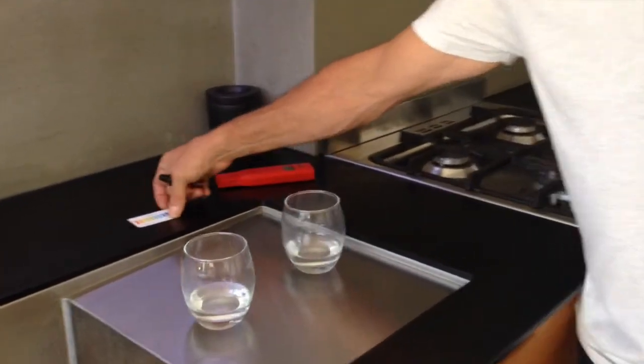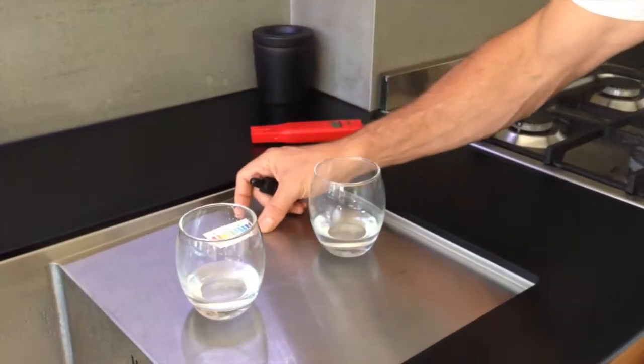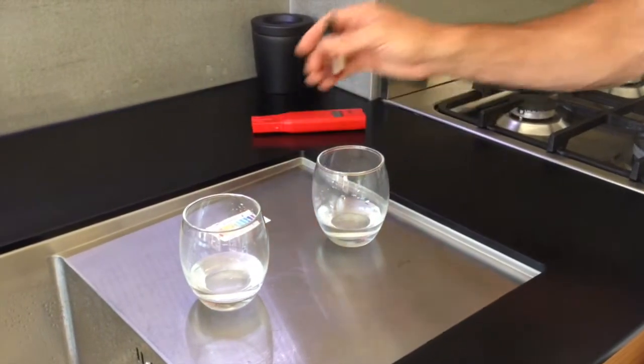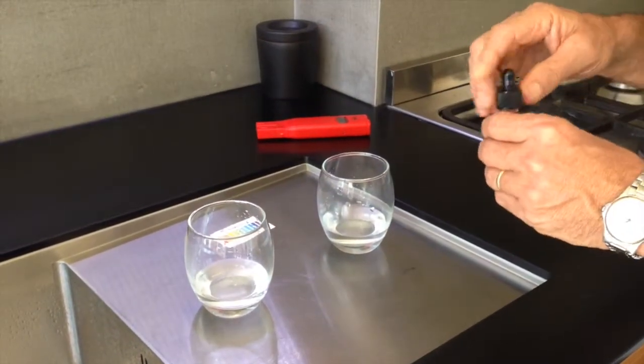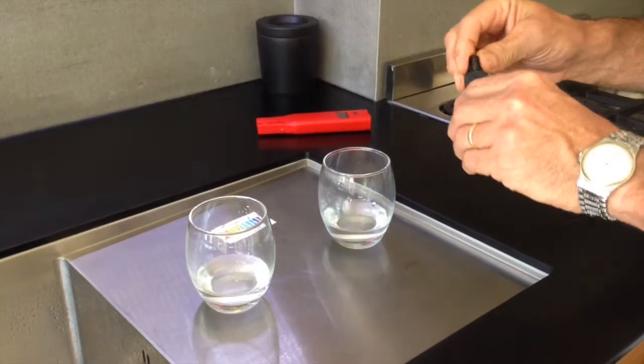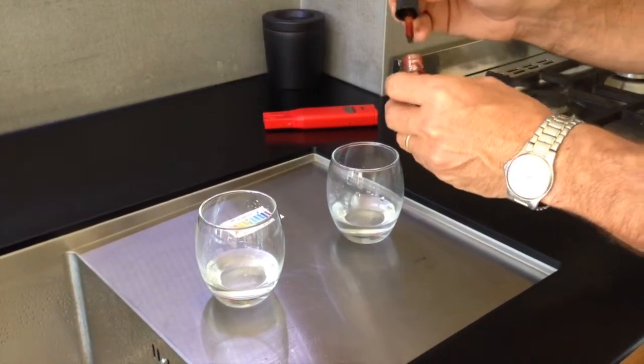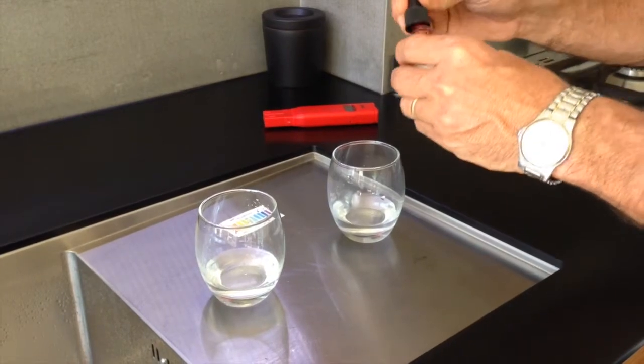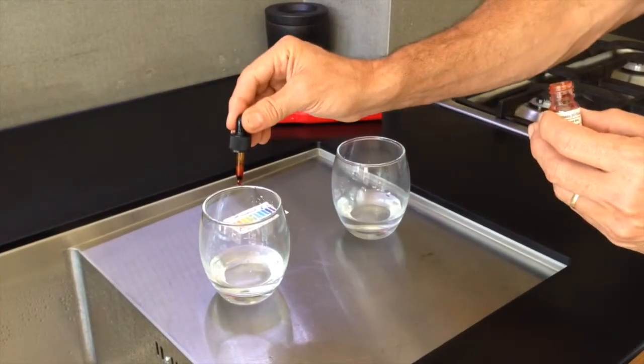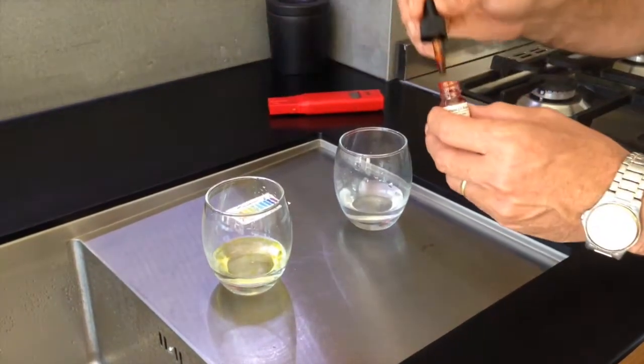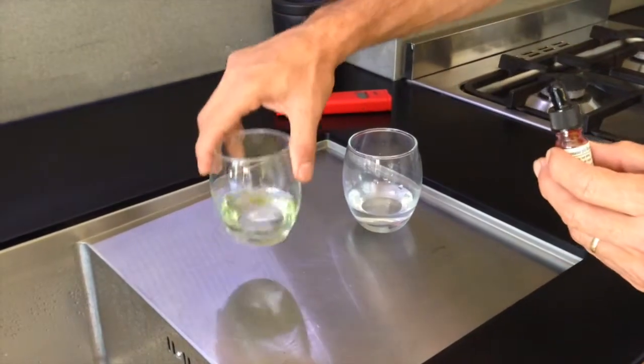First test we're going to do is checking the pH of the water. pH is a measure of the alkalinity or hydrogen in the water. When we put a couple of drops of pH reagent in your water, it'll change color.